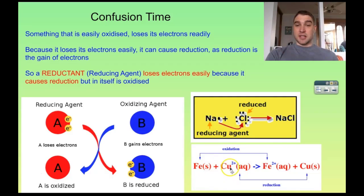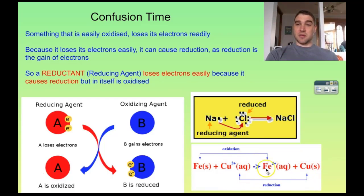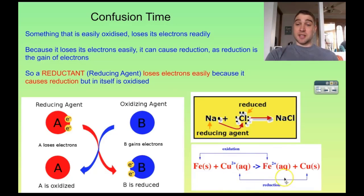The copper ions are gaining electrons — they are being reduced. Because they are being reduced, they are gaining the electrons given off from the iron. By being reduced, they are causing the oxidation of the iron. So the copper ions are an oxidant because they are causing the oxidation of the iron to iron ions.